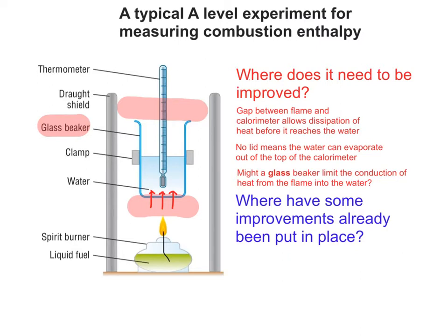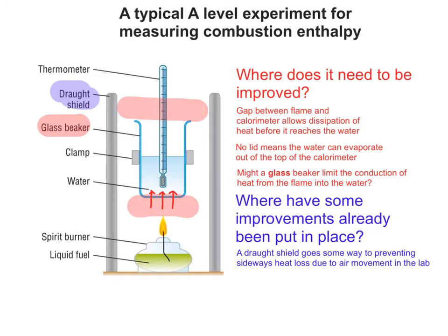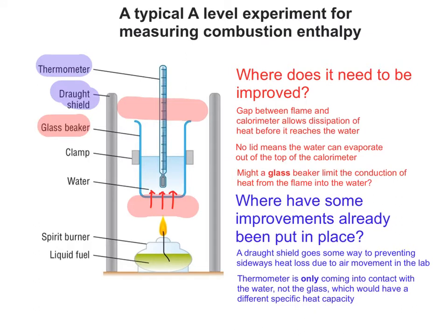So there are some improvements as well — it's not just a series of errors. This builds some of the way to preventing sideways heat loss due to air movement in the lab. In addition, the thermometer itself is only coming into contact with the water, not the glass, which would have a different specific heat capacity.